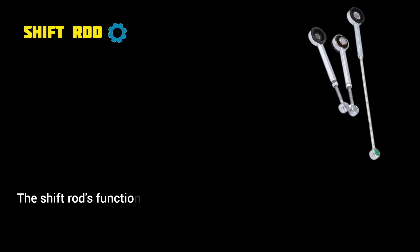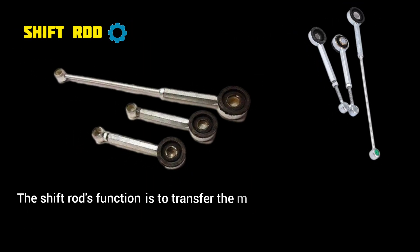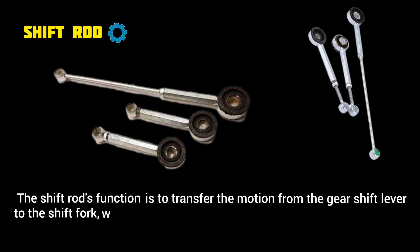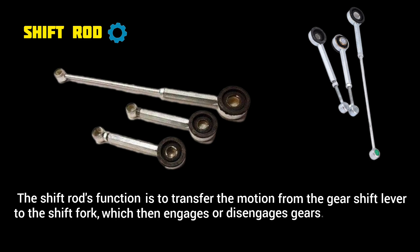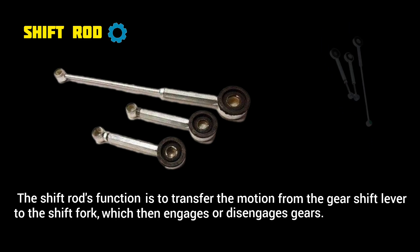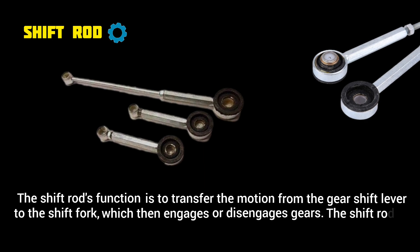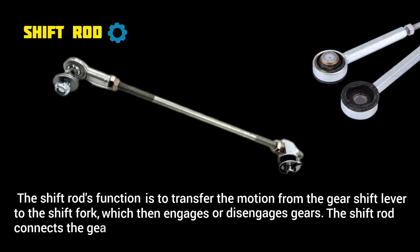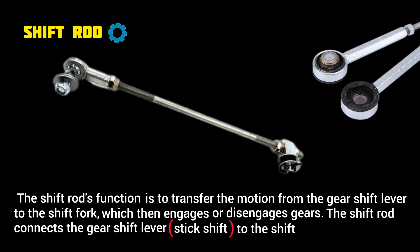Shift rod. The shift rod's function is to transfer the motion from the gear shift lever to the shift fork, which then engages or disengages gears. The shift rod connects the gear shift lever (stick shift) to the shift fork inside the transmission.